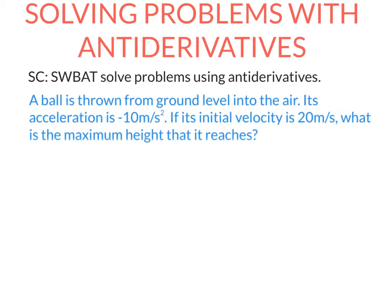A ball is thrown from ground level into the air. Its acceleration is minus 10 metres per second squared. The initial velocity is positive 20 metres per second. We're going to find the maximum height that it reaches.